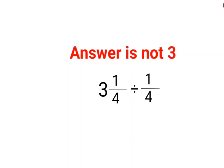Welcome everyone. A lot of people thought that the answer for this one is supposed to be 3, because they see 3 1/4 divided by 1/4, so the 1/4 and 1/4 can get cancelled, and the answer should be 3. Unfortunately, that is not how mathematics works.